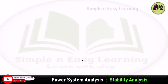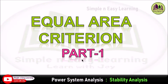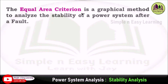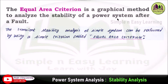Today we are going to discuss stability analysis in power systems — specifically the equal area criterion, Part 1. The equal area criterion is a graphical method to analyze the stability of a power system after a fault. Transient stability analysis of a simple system can be performed using this criterion.